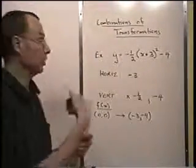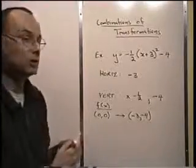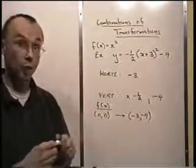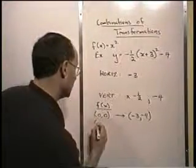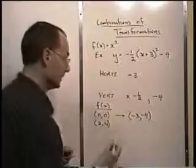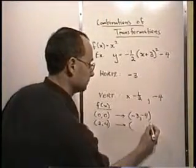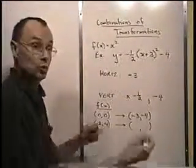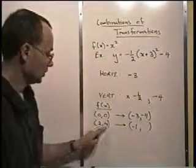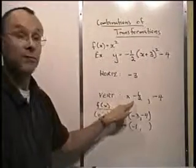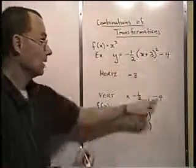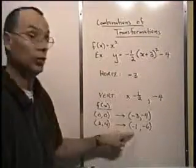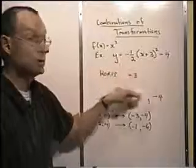I'm going to take one more point from the original function f(x) = x². Let's take the point (2, 4). Horizontally, we subtract 3, so 2 moves to negative 1. For the y value, the 4 gets multiplied by negative one-half, giving negative 2, and then we subtract 4, giving negative 6. So (2, 4) maps to (−1, −6) under all these transformations.